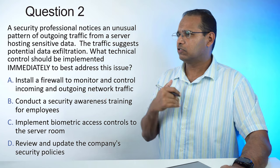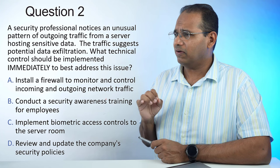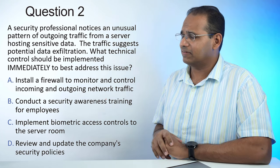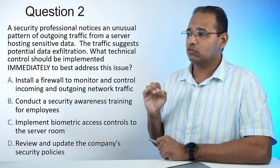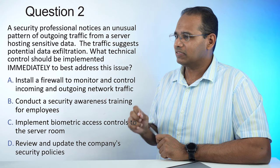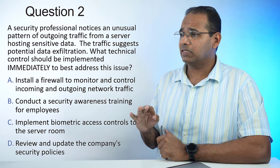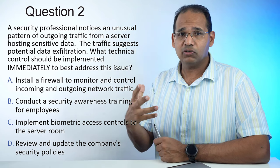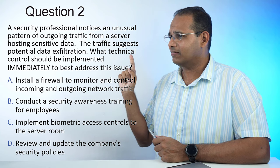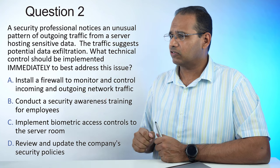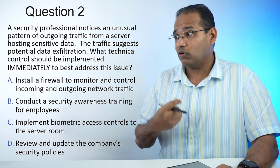Practice question number 2: A security professional notices an unusual pattern of outgoing traffic from a server hosting sensitive data. The traffic suggests potential data exfiltration. What technical control should be implemented immediately to best address this issue? The problem here is that they're stealing data — data is leaving the organization. They want a technical control. Install a firewall to monitor and control incoming and outgoing network traffic — that would actually solve the problem, because a firewall is a technical control.